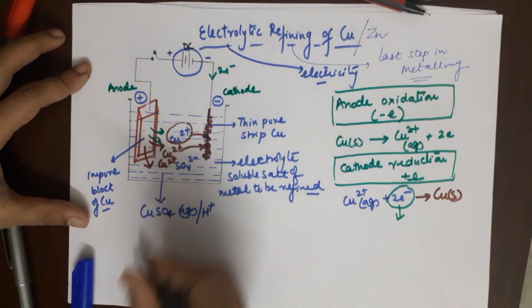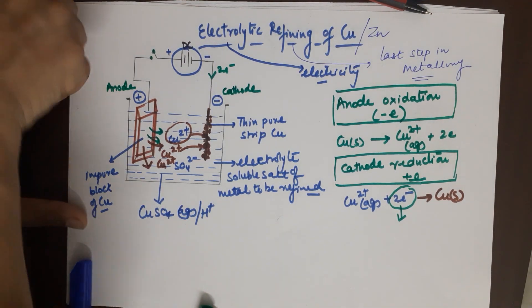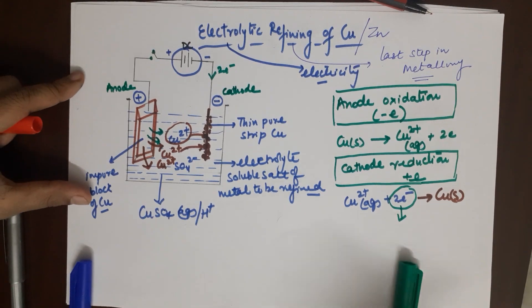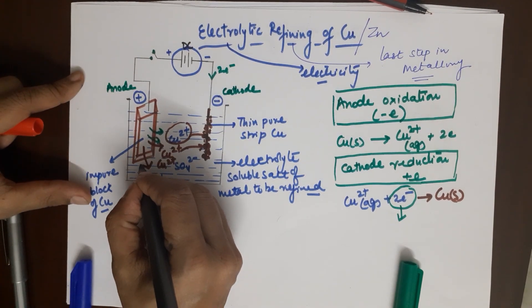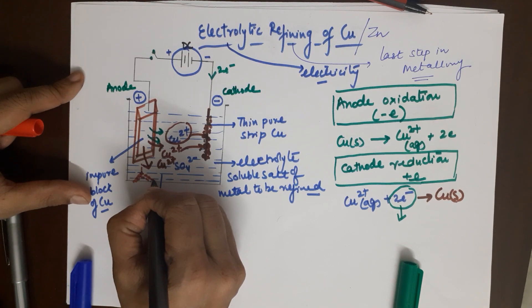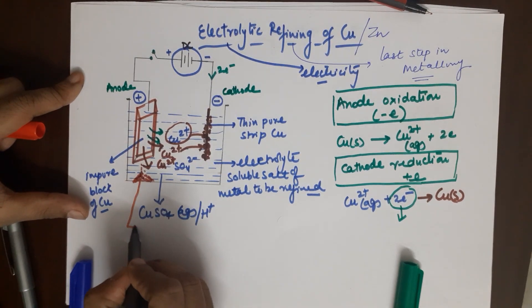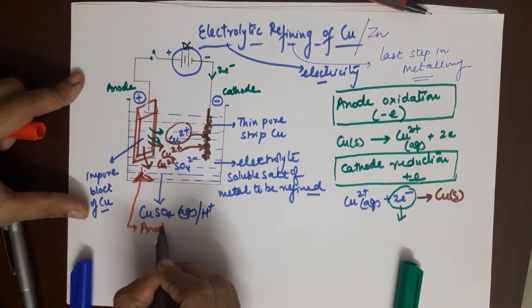From the impure block the pure copper moves out. What are we left with? We are left with impurities which are less reactive. The less reactive impurities start to fall down and they start getting collected here. This impurity collection is called the anode mud.